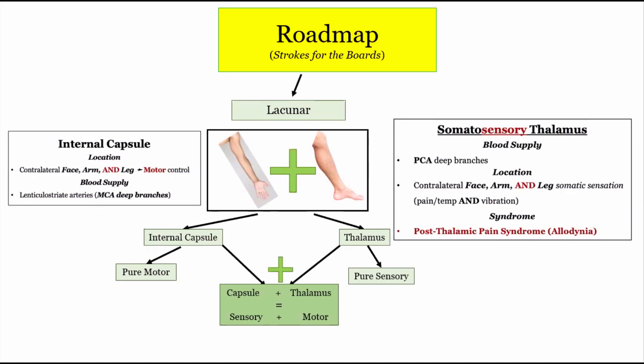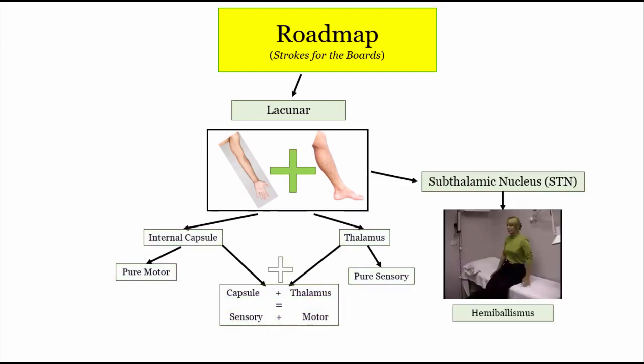Let's summarize. If an acute stroke involves both the face/arm and the leg, you cannot be dealing with an MCA or ACA stroke on the boards. Once you've recognized face, arm, and leg involvement, look for whether motor, sensory, or both are impacted. Unilateral pure motor involvement suggests a lenticulostriate arterial occlusion causing a lacunar stroke hitting the contralateral internal capsule only. Unilateral pure somatosensory deficits suggest a PCA deep branch occlusion hitting only the contralateral somatosensory thalamus — remembering these strokes can present weeks later with allodynia or post-thalamic pain syndrome. If both sensory and motor are involved, think about rupture of a small microaneurysm extending from the thalamus into the internal capsule. A contralateral subthalamic nucleus stroke will cause one-sided hemiballismus.